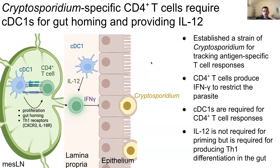Importantly, these studies and tools can be used to develop vaccines against cryptosporidium, which is not only a cause of disease in immunocompromised individuals, as mentioned earlier, but is also a major cause of diarrhea, death, and growth stunting in malnourished children globally.